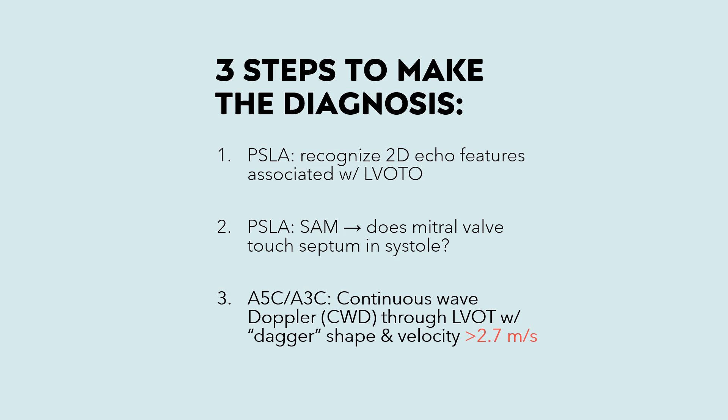Here are the three steps to diagnose LVOT obstruction. First, in the parasternal long axis view, recognize 2D echocardiographic features associated with LVOTO, such as basal septal hypertrophy in the elderly, Takotsubo cardiomyopathy with basal hyperkinesis, and a thick septum in hypertrophic cardiomyopathy. Second, in the parasternal long axis view, look for SAM — does the mitral valve touch the septum in systole? You can use M-mode to help identify this. Third, and most important, in the apical 5-chamber or apical 3-chamber view, use continuous wave Doppler through the LVOT and find a dagger-shaped appearance with a velocity greater than 2.7 meters per second.